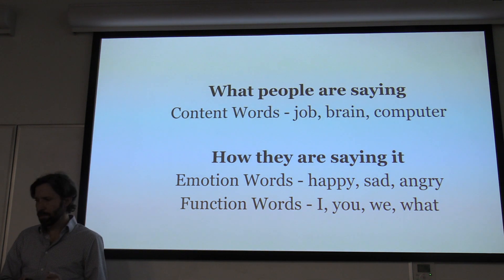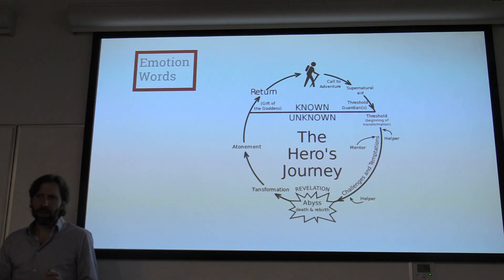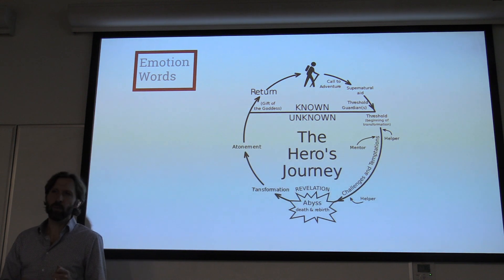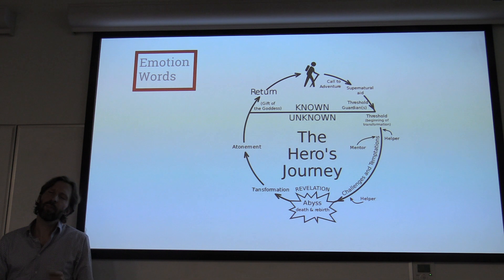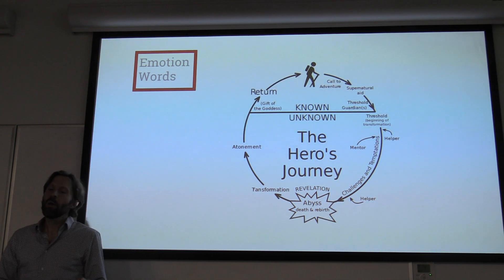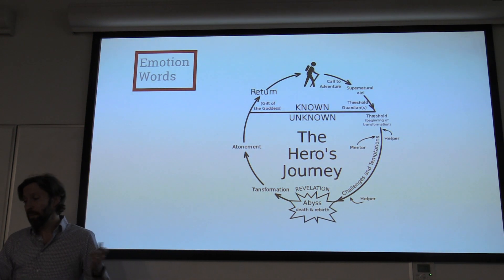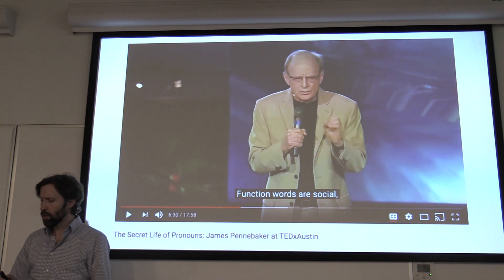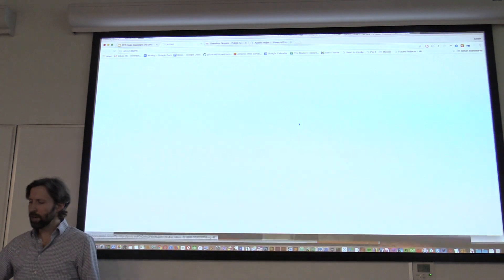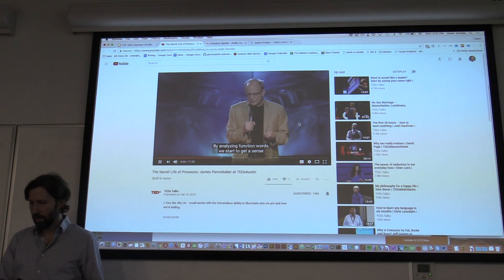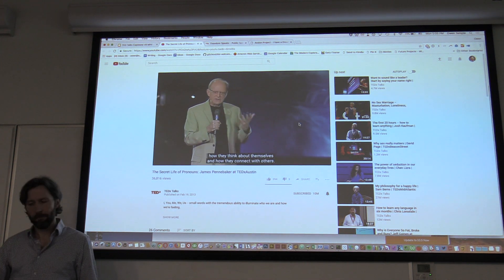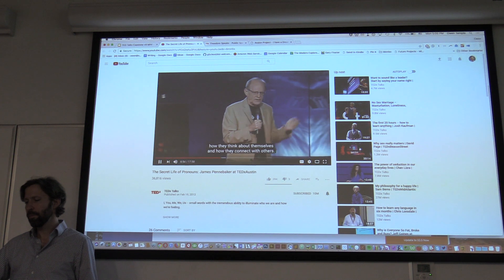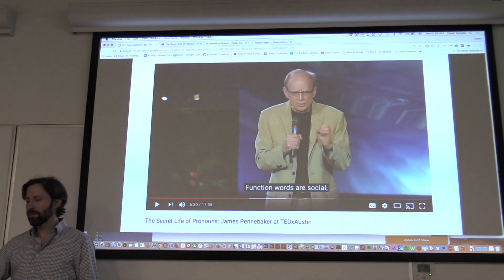Let's think about emotion words first. In storytelling and mythology, there's an idea of the hero's journey — a storytelling framework in which a hero leaves, encounters challenges, a huge challenge, and then achieves a final victory. I thought that to the extent TED talks follow that emotional course, they may be more successful. I also thought about function words. Here's one of my past research collaborators, James Pennebaker, talking about function words: we started to get a sense of who people are, what their relationships are, how they think about themselves, and how they connect with others. So: emotion words and function words.